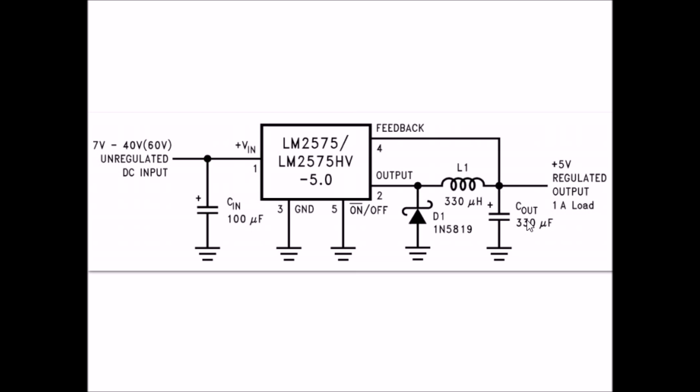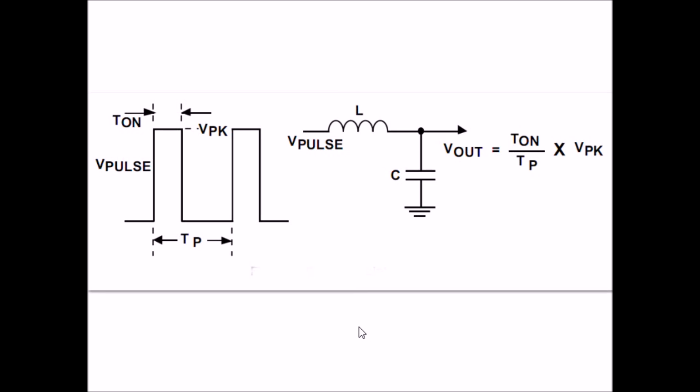L1 and Cout essentially form a sort of a tank or storage circuit for the energy that you're pumping into it from pin 2, the pulse-width modulation output. D1 here is a high-speed Schottky switching diode. It's used on the off-cycle of the pulse-width modulation output. When the magnetic field on L1 collapses, that energy through D1 is also stored back on the capacitor. This illustrates a pulse-width modulated voltage into our inductor-capacitor-tank filter circuit. The voltage output is dependent on the duty cycle, which is T on divided by T period times the voltage peak.